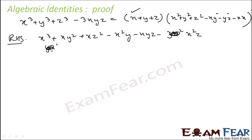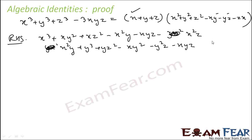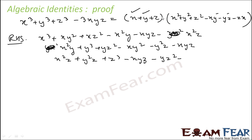Multiplying y into the bracket: y × x² = x²y, y × y² = y³, y × z² = yz², minus y × xy = −xy², minus y × yz = −y²z, minus y × zx = −xyz. Then z into the bracket: z × x² = x²z, z × y² = y²z, z × z² = z³, minus z × xy = −xyz, minus z × yz = −yz², minus z × zx = −xz².